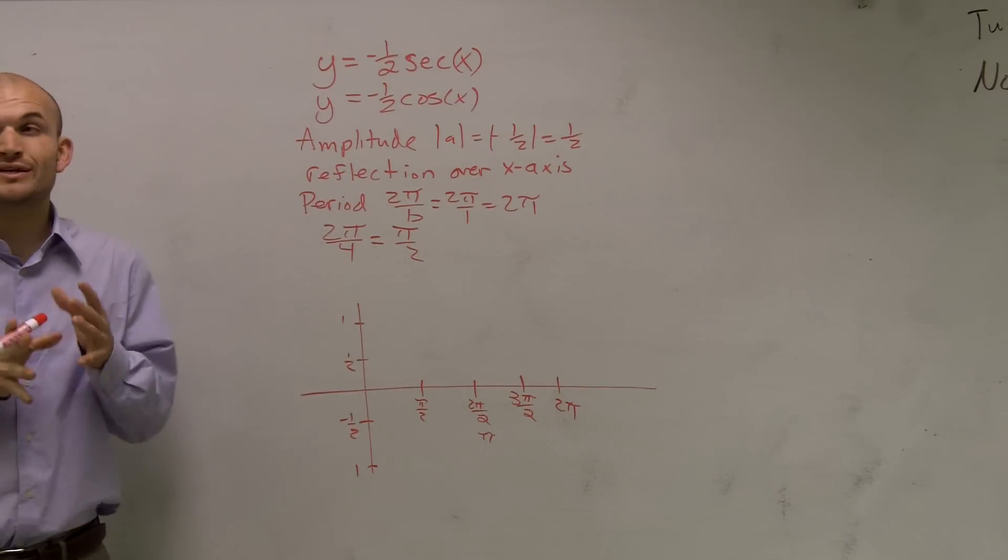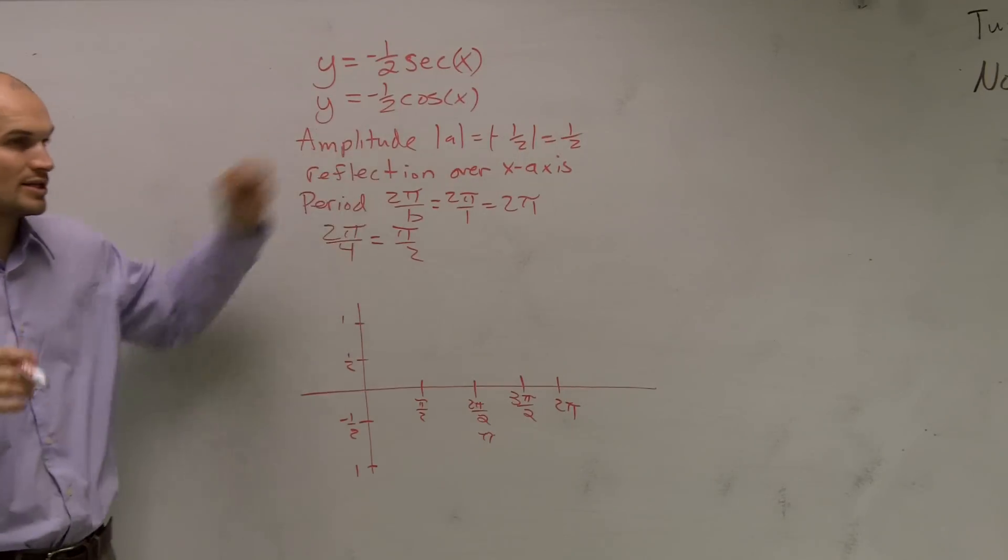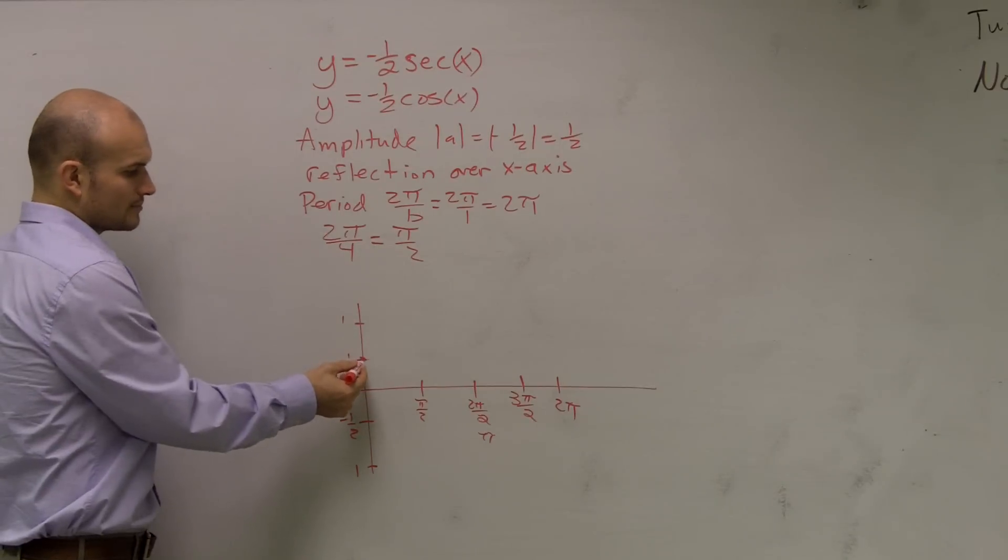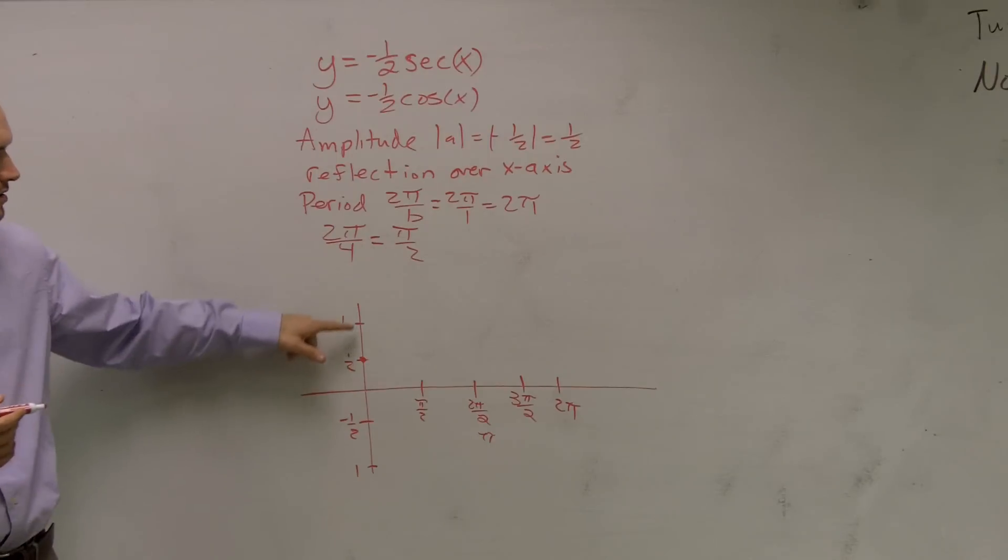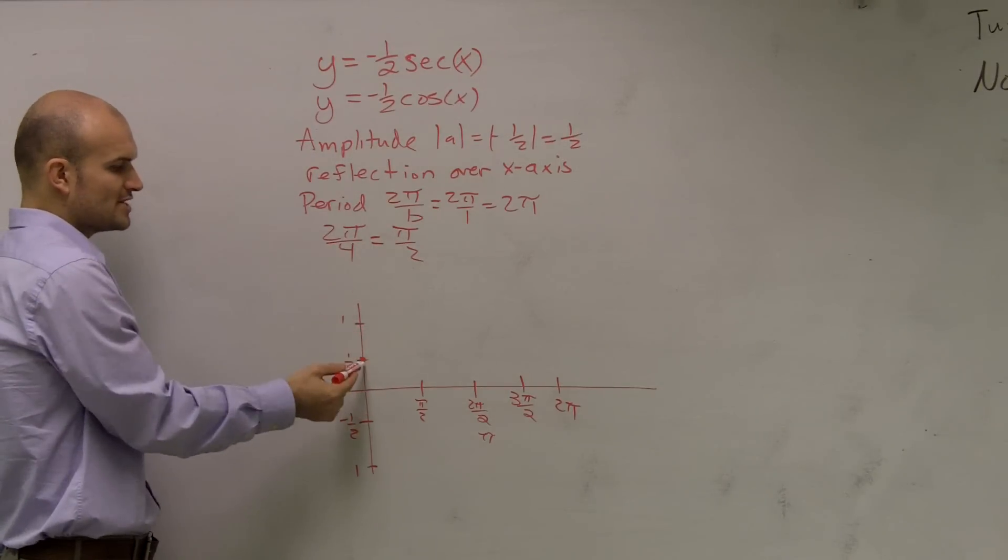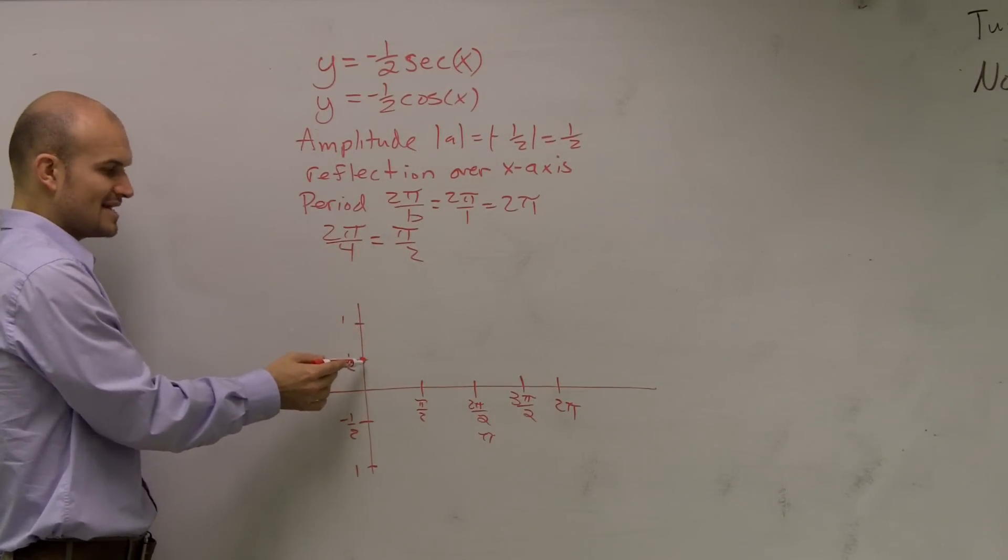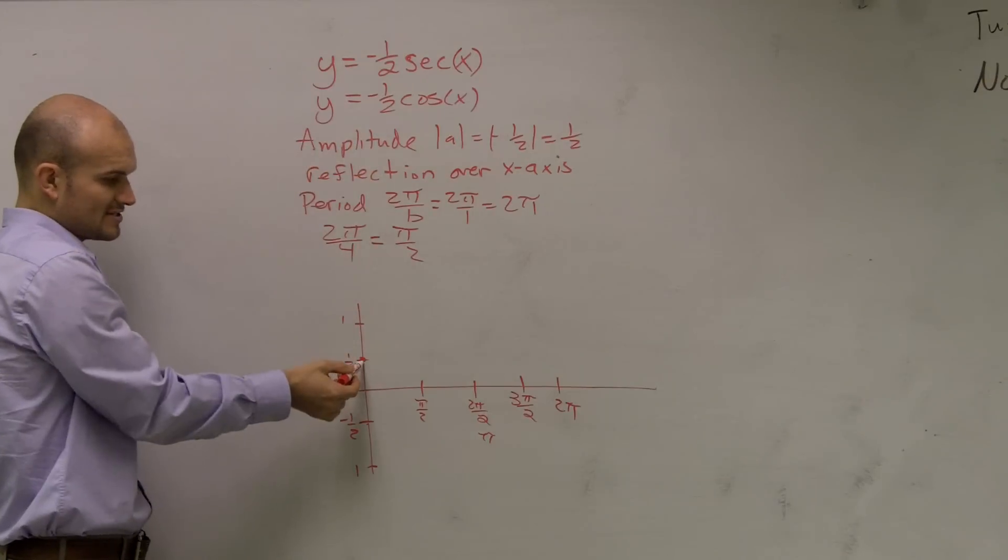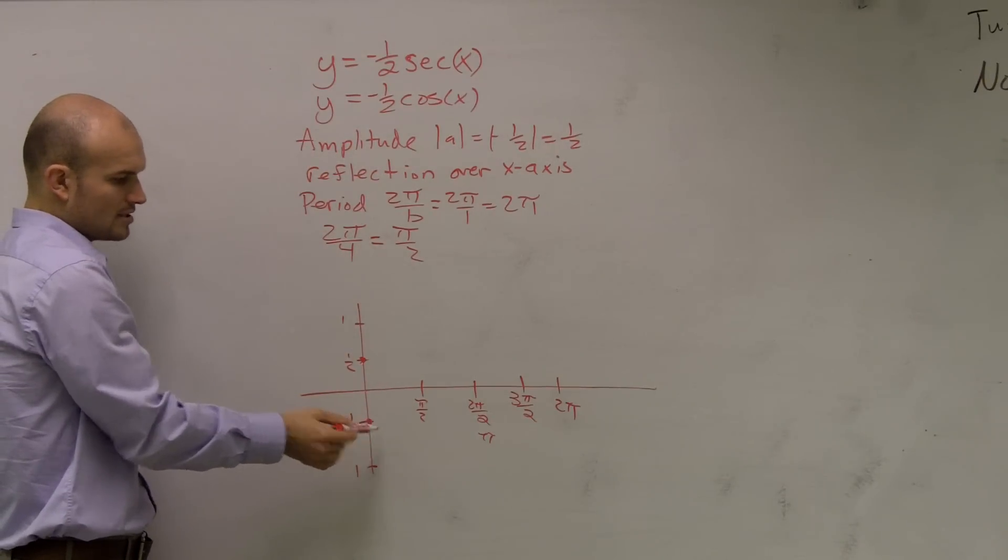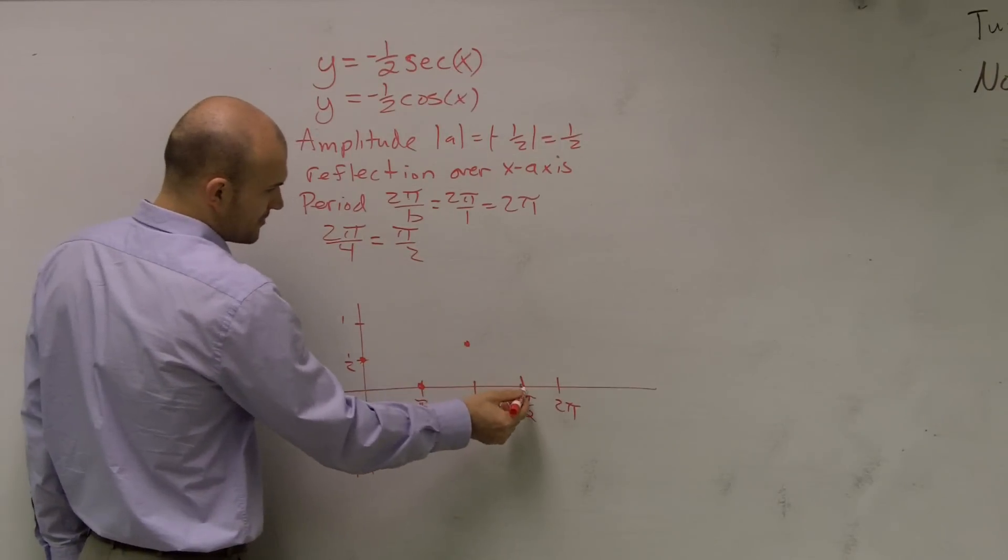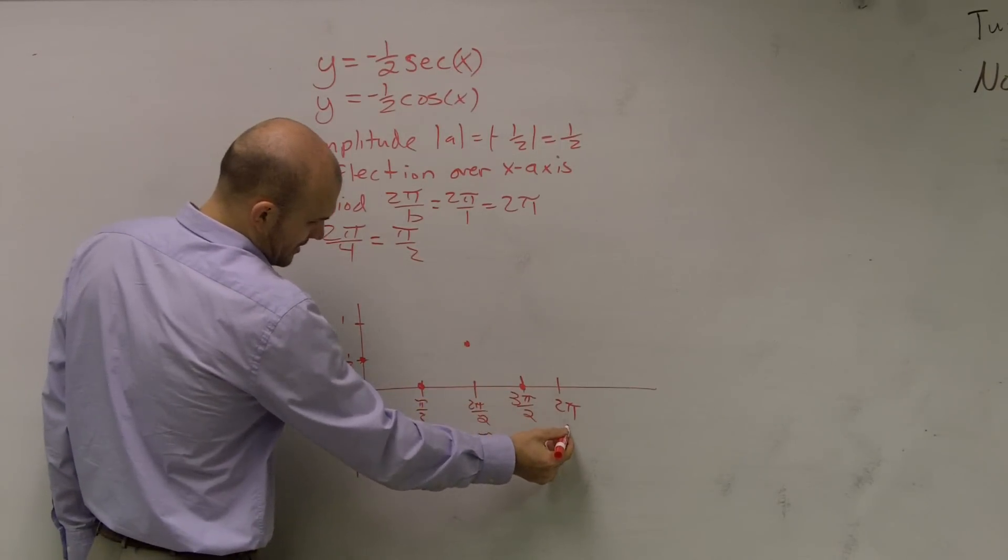It's really helpful if you just very lightly graph what this function is going to look like. Remember there's a reflection. Usually a cosine graph crosses the y-intercept when y is positive. Our amplitude has been changed to one-half, but now we have a reflection over the x-axis, so my graph is going to start down here at negative one-half. There's an intercept, there's my maximum, there's my minimum, and here's where it's going to end.